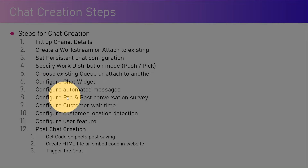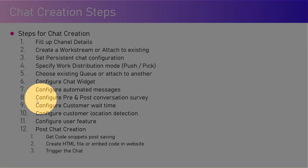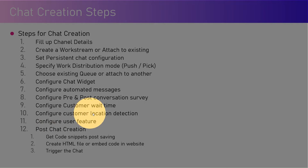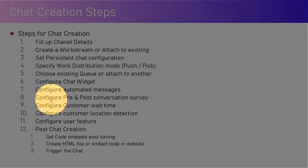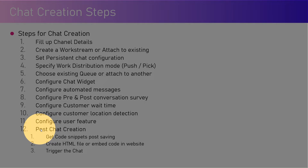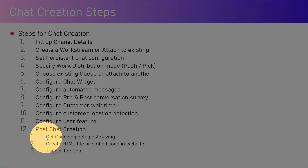Configure automated messages if there are any, configure pre and post conversation surveys, configure customer wait time, configure customer location detection, and configure user features. Once all these configurations are done, there is a post-chat creation activity which you need to follow.